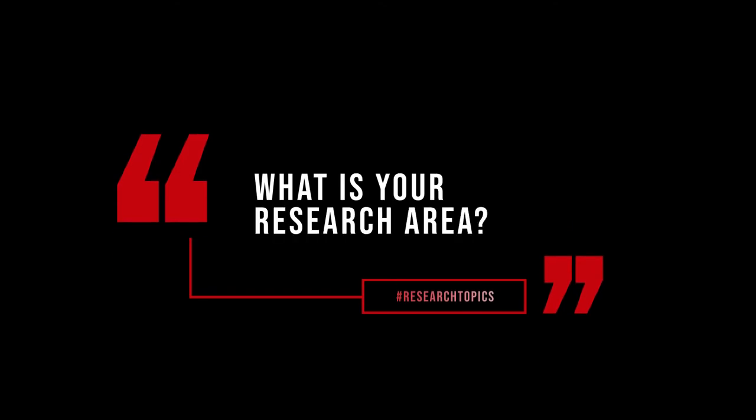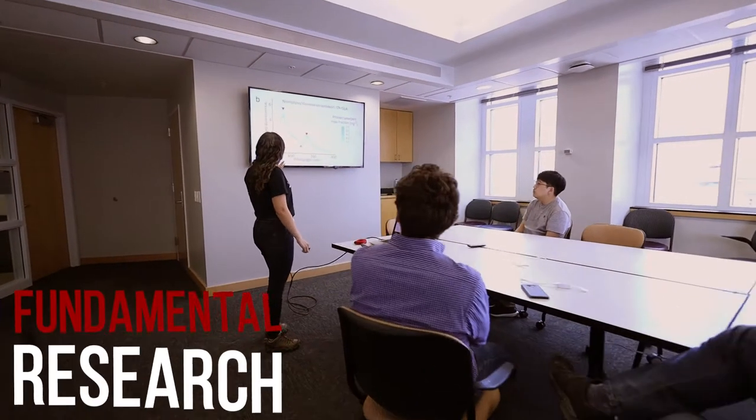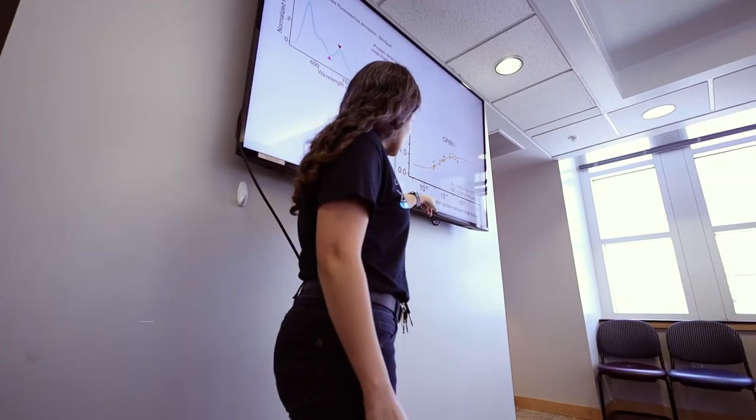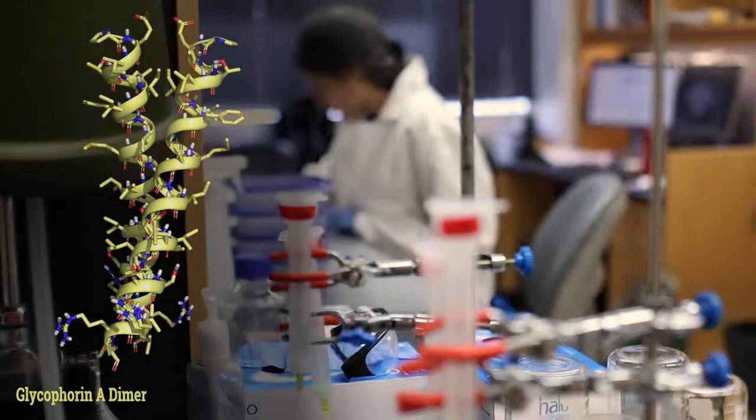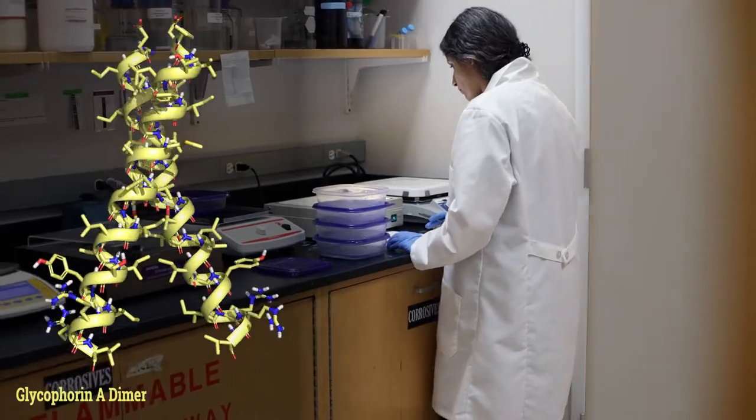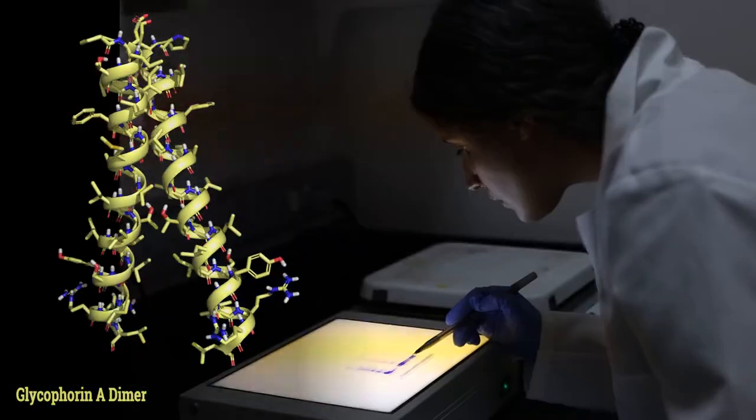I'm studying the association of transmembrane helices when they are in the dimer state. In my case, I am interested in understanding the energetics behind that process and how changing sequence at the interface of the dimer will affect the stability, the thermodynamic stability.